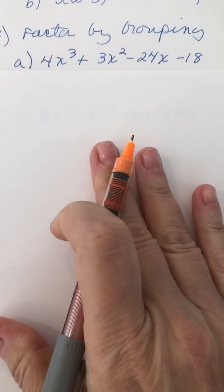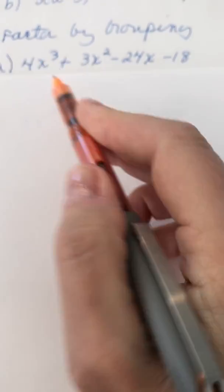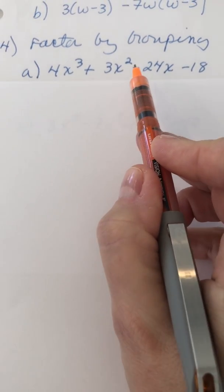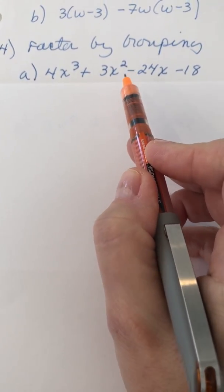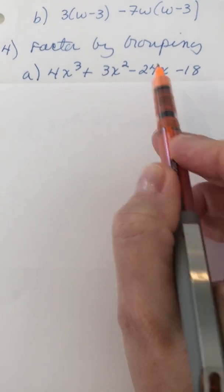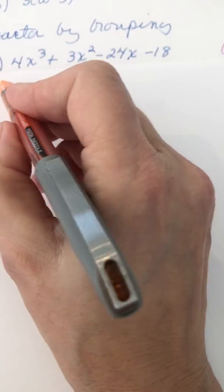So we have four terms here. They're separated by plus signs. Here we can understand that it's plus a negative plus a negative. So four terms.